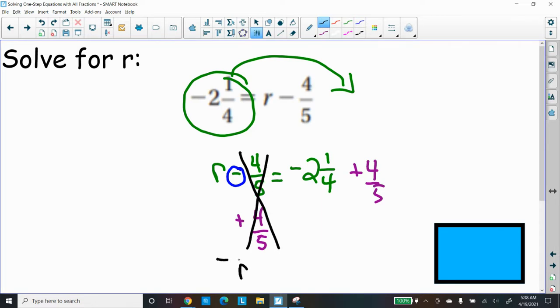We have R equal to, and again, get your calculator, negative 2 and 1 fourth plus 4 fifths. And that'll give you the answer. Bring it in the class and we'll see what you got.